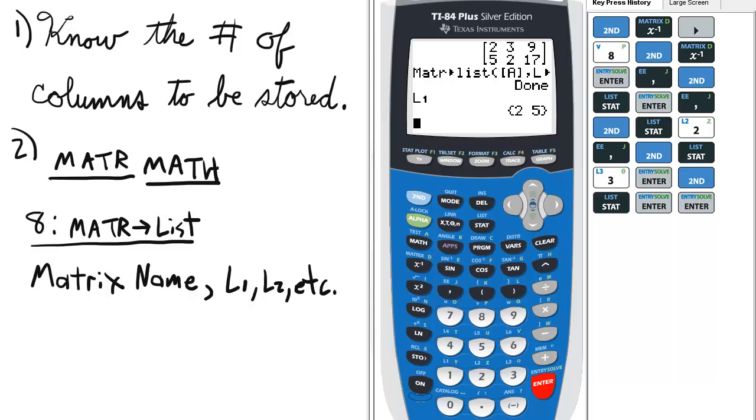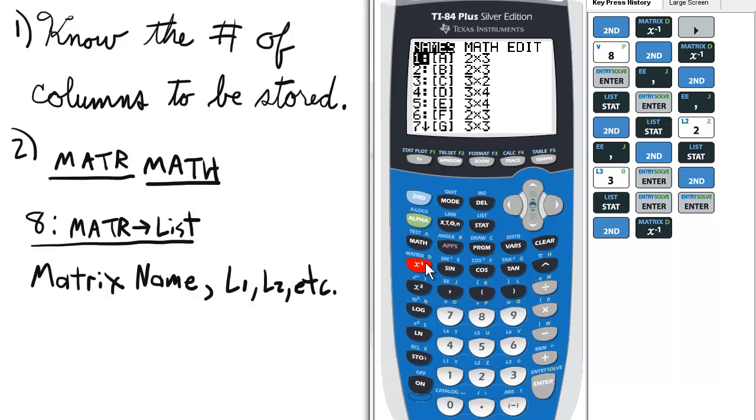Now, there's a few other ways you can do this. A variation is to select only one column from our matrix and store it into a list. We go back to the matrix math menu, and we select 8.